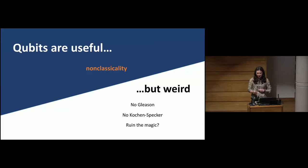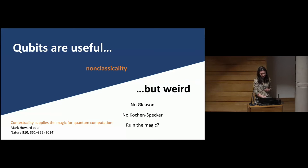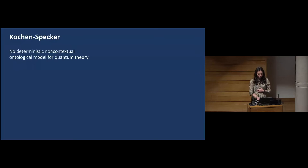In many ways, qubits are also quite weird in that they're an anomalous case for some notions of non-classicality. For example, you can't prove Gleason's theorem for a single qubit, and you can't prove the Kochen-Specker theorem. There's a nice relationship showing how contextuality allows universal quantum computation in a certain scenario — this works for odd prime dimensions, but for even prime things are less obvious. So I'm mainly going to look at the Kochen-Specker aspect.